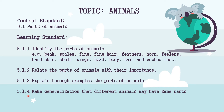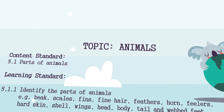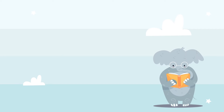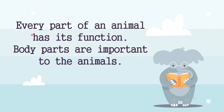And standard 5.1.4: make a generalization that different animals may have the same parts of the body. Now let us start — the importance of parts of the body. Every part of an animal has its function. Body parts are important to animals.